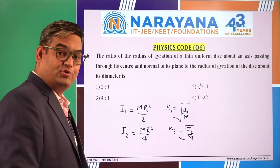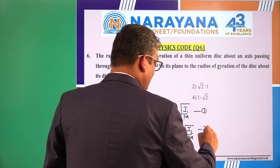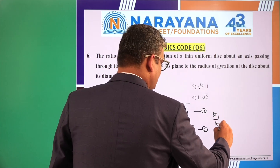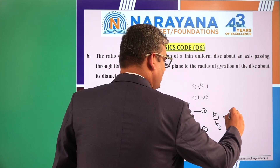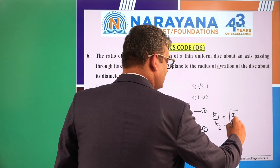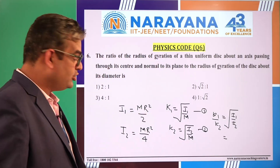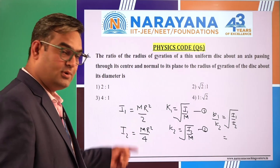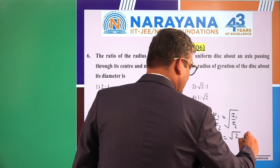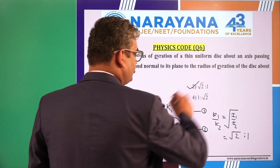Dividing these two equations gives K1 by K2 equals the square root of I1 by I2. The ratio I1 by I2 is MR²/2 divided by MR²/4, which equals 2. So K1 by K2 equals √2 to 1. Hence the second option should be correct.